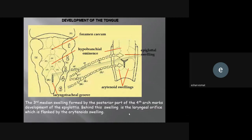Also, the third median swelling formed by the posterior part of the fourth arch marks development of the epiglottis. Behind this swelling is the laryngeal orifice, which is flanked by the arytenoid swellings. This is just information for you to understand, not for the exam.